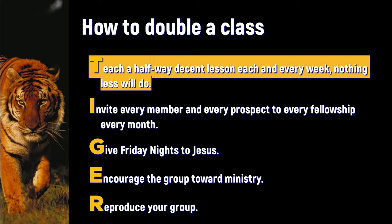This is the first of five principles of how to double a group every two years or less. First, teach a halfway decent lesson each week. Invite every member and prospect to every fellowship every month. Give Friday nights to Jesus. Encourage the whole group toward ministry. And lastly, reproduce our group.